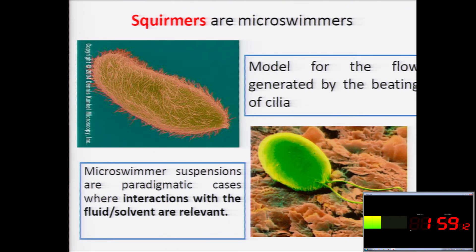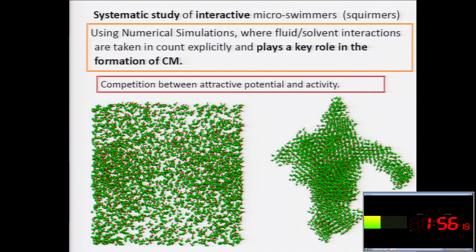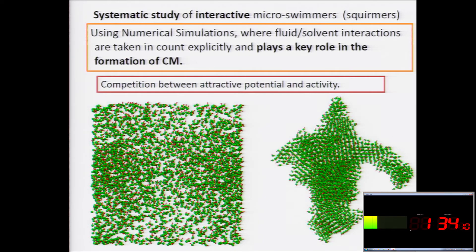What we did is use numerical simulation and high-performance computing to do a systematic study of these micro-swimmers, adding also an interaction between them in order to simulate the communication and cohesion between the particles. So you have the parameters that model how they swim, how they interact with the fluid, and on the other hand you have the interaction between them. Tuning these two parameters, you can find different kinds of collective behavior.